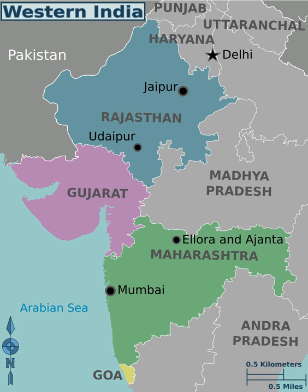In ancient history, Western India was divided into three great states according to Xuanzang: namely Sindh, which comprised the whole valley of the Indus from the Punjab to the sea, including the delta and the island of Kutch; Gurjara, which comprised Western Rajputana and the Indian desert; and Valabhi, which comprised the peninsula of Gujarat with a small portion of the adjacent coast. Before the partition of India, the now Pakistani territories of Sindh and Baluchistan were also included in this region.